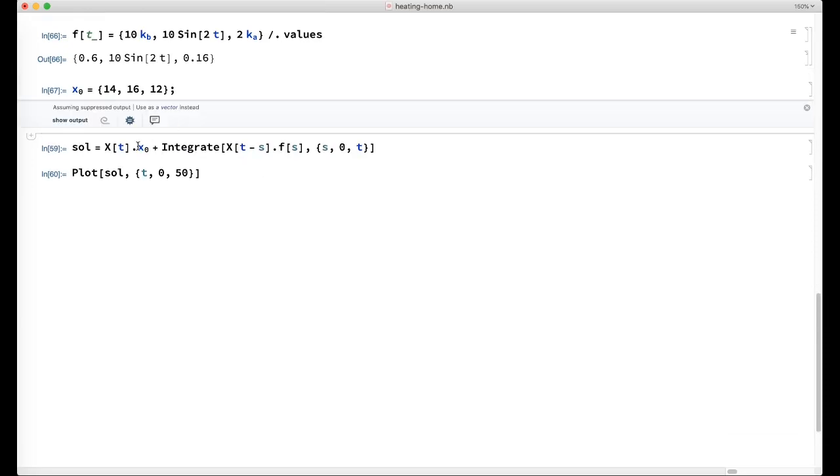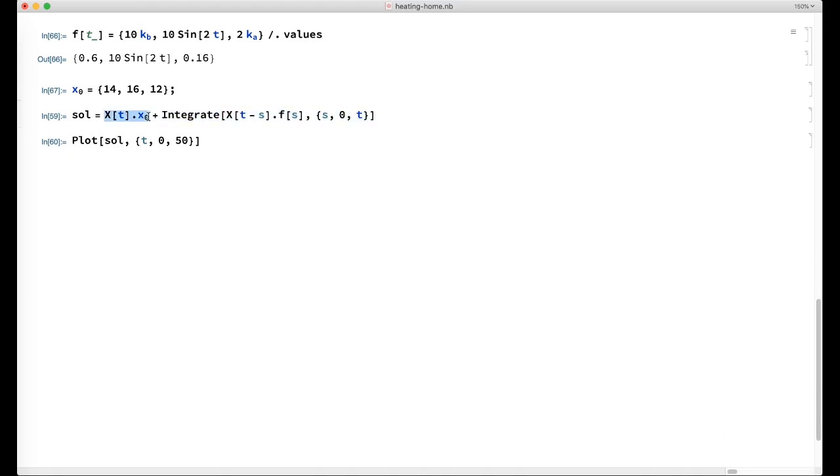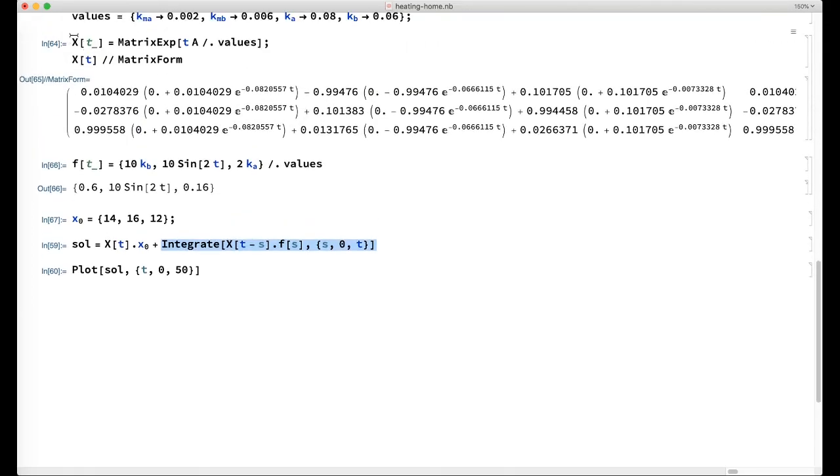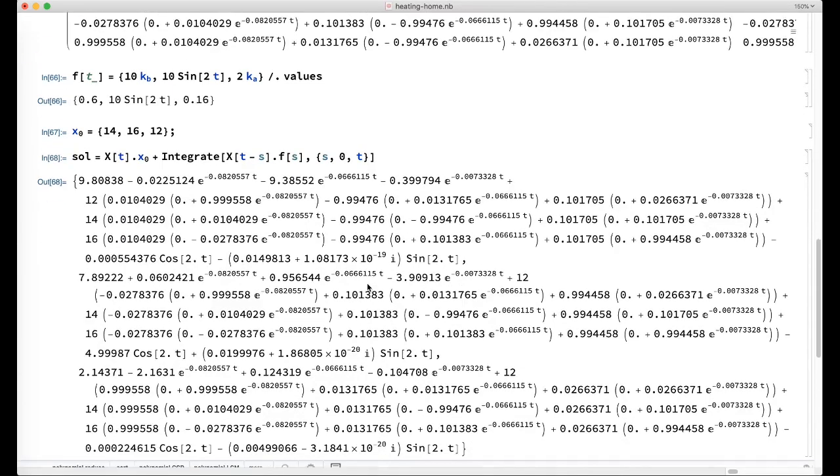And then here is the variation of parameters formula. So in Mathematica, you use a dot for matrix products or matrix vector products. So there's the homogeneous part, and then here's the particular part expressed as an integral. Remember, capital X is what I defined as the matrix exponential. So we ask it for the solution. And there it is.